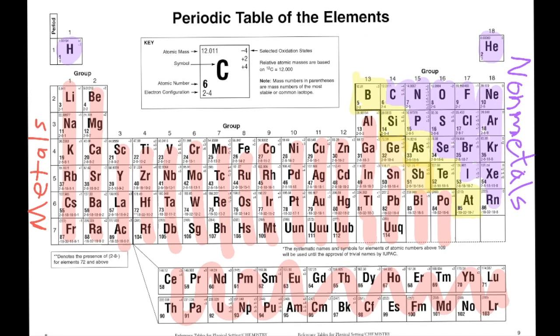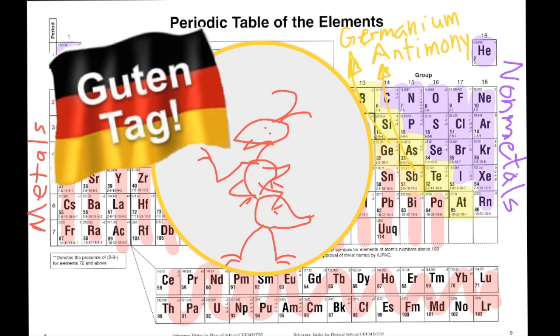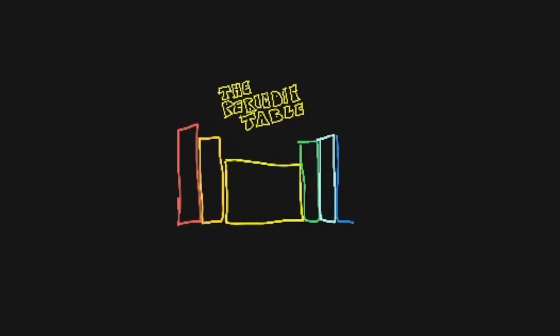These elements are germanium, abbreviated Ge, and antimony, abbreviated Sb. To remember these two elements, I imagine a German ant who lives under the stairs on the Periodic Table. Well, hopefully that'll help you remember some things about the Periodic Table of the Elements.